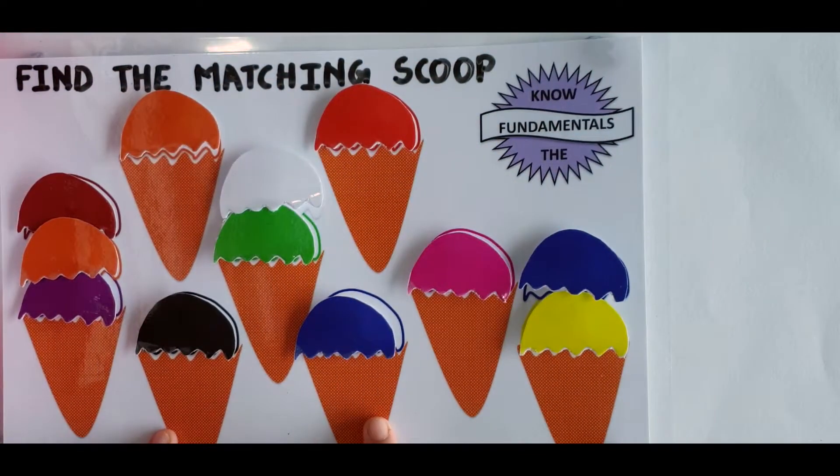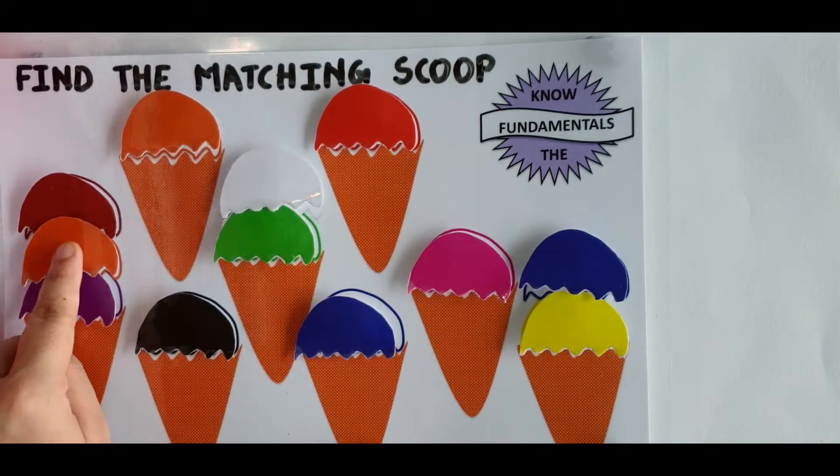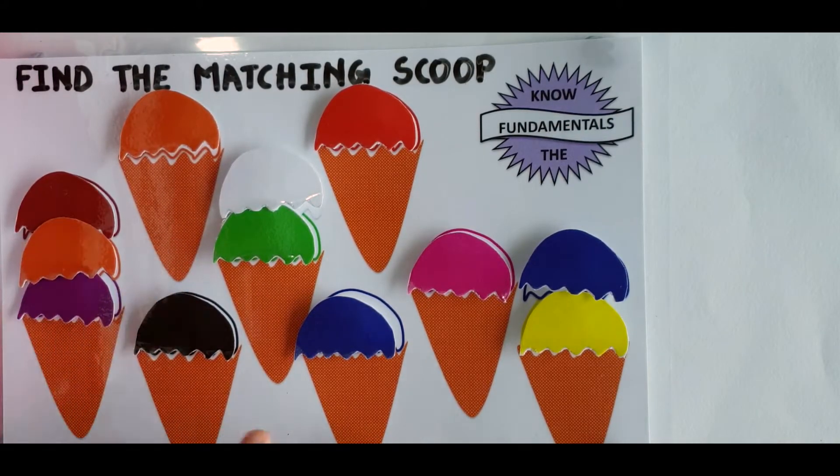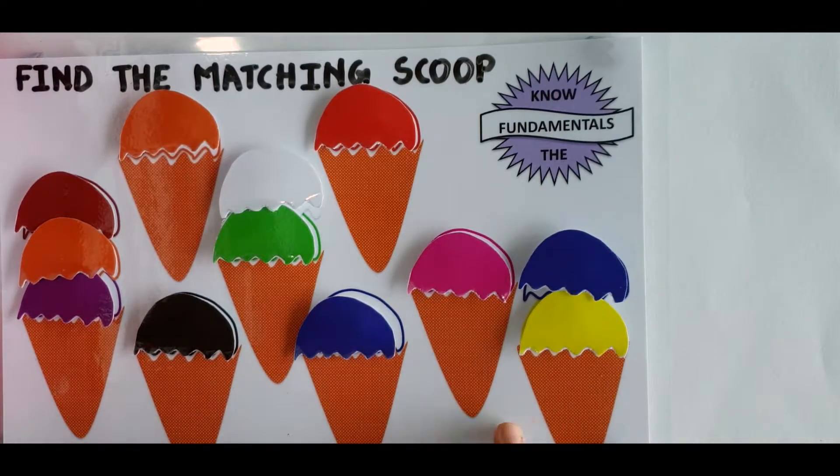Later, you could also ask kids like how many scoops here? So they can count one, two, three. So three scoops. How many scoops here? One, two. So they can say two scoops.